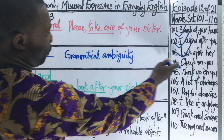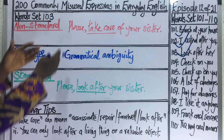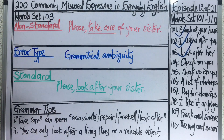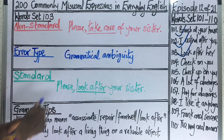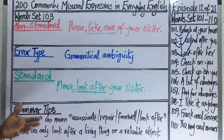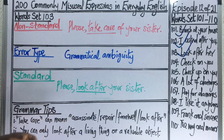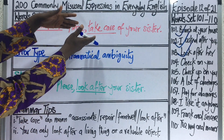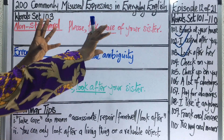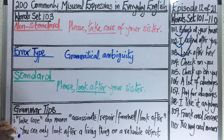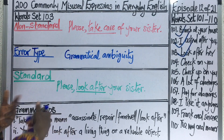Our next expression from word set 103 is: Please take care of your sister — with 'take care of' underlined to indicate grammatical ambiguity. An expression is ambiguous if it is capable of being interpreted in several ways because of the choice of words used. In other words, the expression is not clear in meaning. Take care can mean several things.